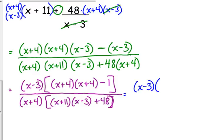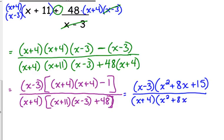All right, so x plus 4 times x plus 4 gives us x squared plus 8x plus 16, but I'm going to go ahead and subtract that 1 from it so that I don't have to write that entire line all over again just to subtract 1. And the denominator, keep the x plus 4 in front. Let's see here. x squared minus 3x plus 11x is plus 8x. And 11 times negative 3 is negative 33. Negative 33 plus 48 is 15. Oh, look at what just happened right there.